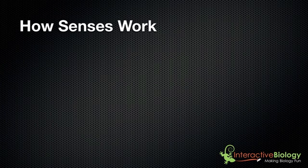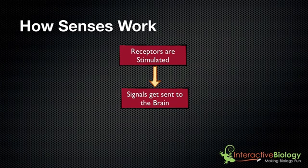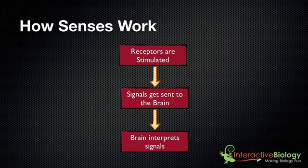We spoke about the five senses and we said that the general mechanism, the general overview in terms of how it works is first receptors are stimulated, then signals get sent to the brain, and then the brain interprets the signals that it's receiving. This is the way you smell, the way you see, the way you feel, and so on. So that's a general overview.